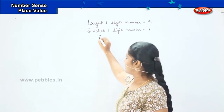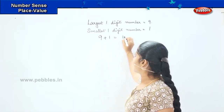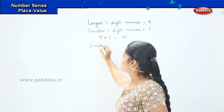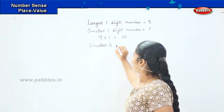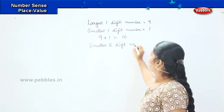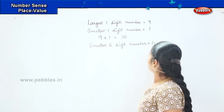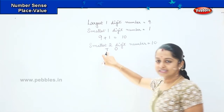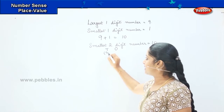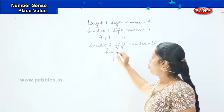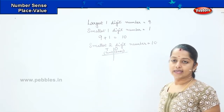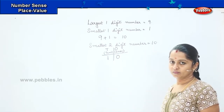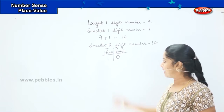When I add nine plus one, it becomes ten. So ten is my smallest two-digit number. How will you write ten, children? We have a tens column and a ones column. T stands for tens and O stands for ones. You will write zero in the ones column and one in the tens column. So which is my smallest two-digit number? It is ten.